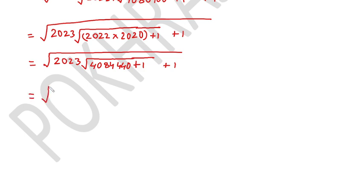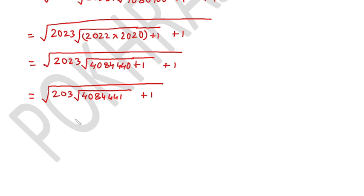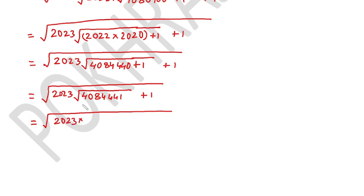So we have √2023 × √(4,084,441 + 1). The square root of 4,084,441 is 2021. Now we have √2023 × √(2021) under bracket, plus 1. After a small correction — it's 2023, not 2003 — we proceed: √4,084,441 = 2021, so the expression reduces to √(2023 × 2021 + 1).